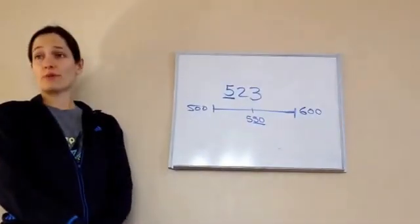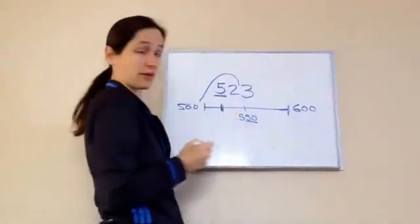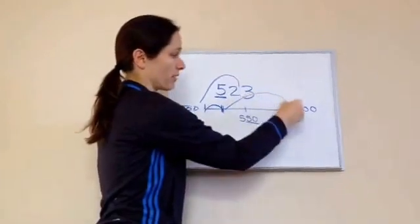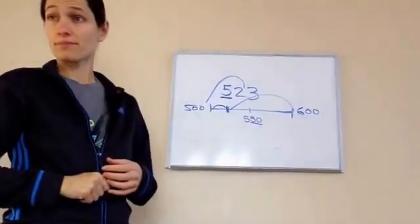All right, and so 523 would be where? 500. Closer to 500 because it would be somewhere right in here, which is closer to 500 rather than all the way to 600. So, we're just rounding numbers. Pretty simple, huh?